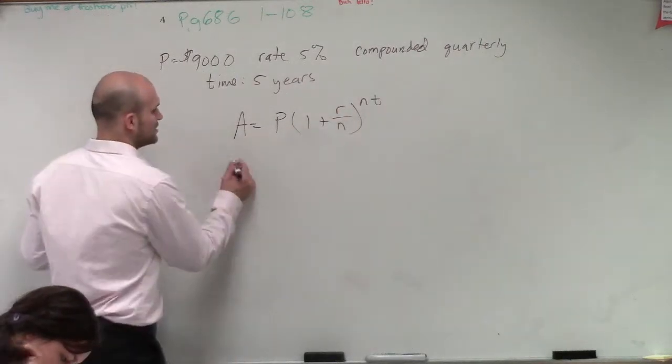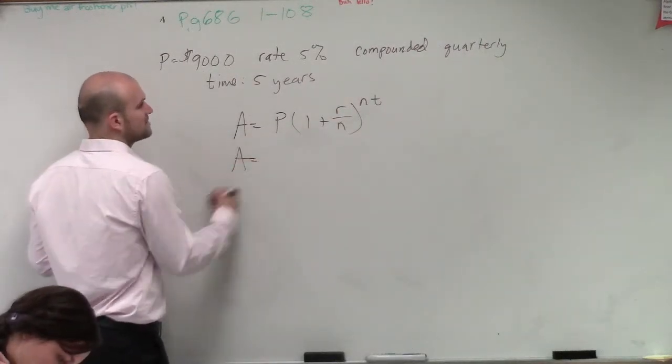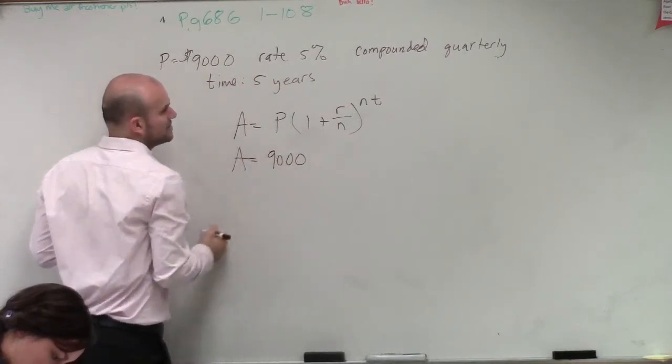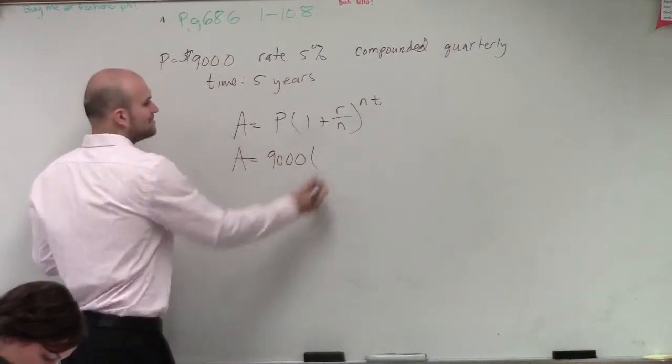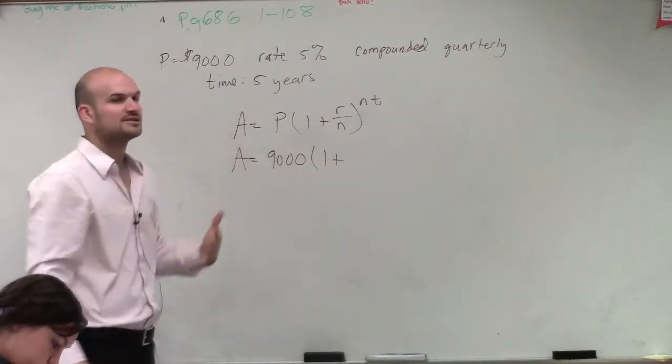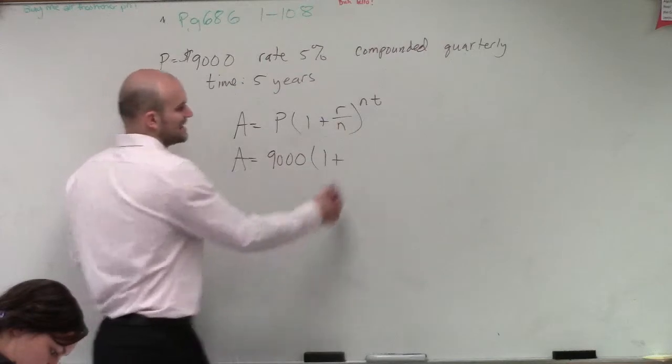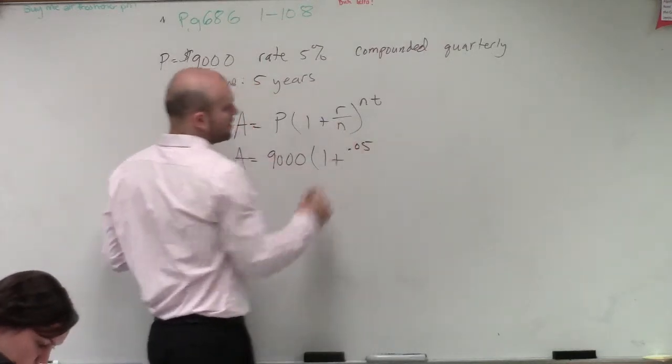Now I'm going to enter the values I know. P, your initial amount, was $9,000 times 1 plus... Remember, when you're writing your rate, make sure you write it in decimal form. So it's going to be 0.05.